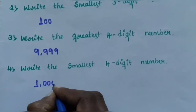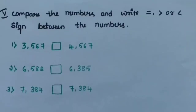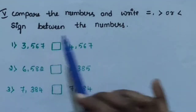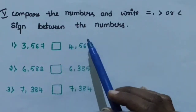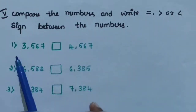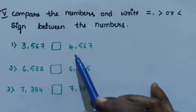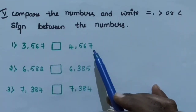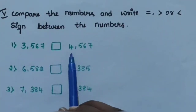1000 is the smallest 4-digit number. Fifth main: compare the numbers and write equal, greater than, or less than sign between the numbers. Question number 1: 3567 and 4567.